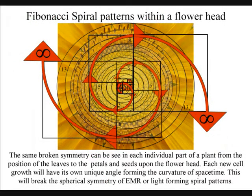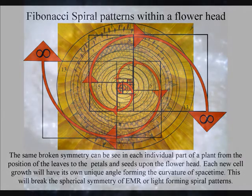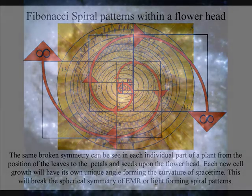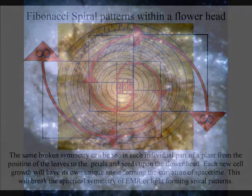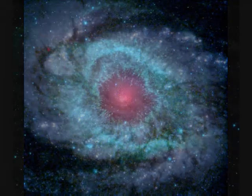The same broken symmetry can be seen in each individual part of a plant, from the position of the leaves to the petals and seeds upon the flower head. Each new cell growth will have its own unique angle, forming the curvature of space-time. Therefore, we see the same patterns in plant life as we do in deep space, formed by the same universal geometry.